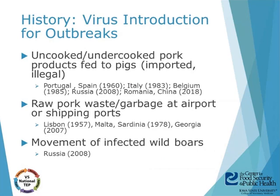How was the virus introduced into those countries? The outbreaks have been linked to several factors: uncooked or undercooked pork products fed to pigs, both imported and illegal; raw pork waste or garbage at airports or shipping ports fed to pigs; or the movement of infected wild boars that contact domestic pigs. It has been reported that the USDA has asked Customs and Border Protection to target inspections of passengers and cargo coming from ASF-positive regions.